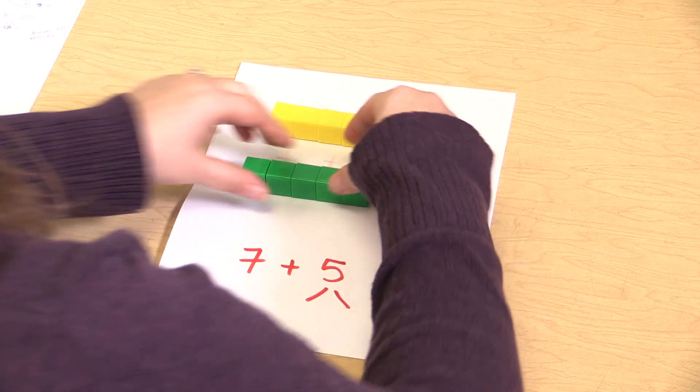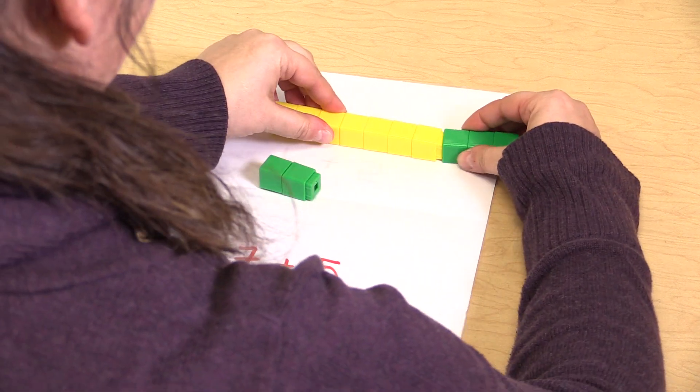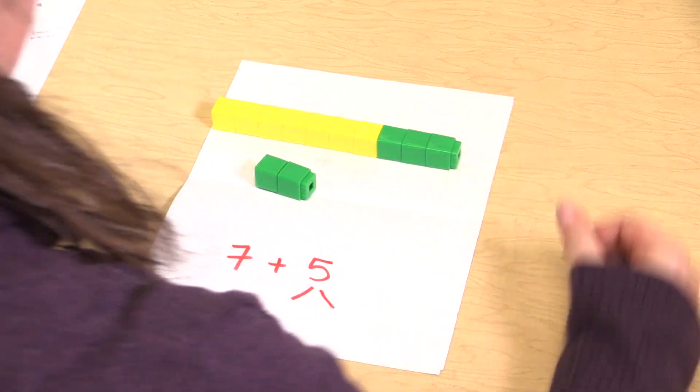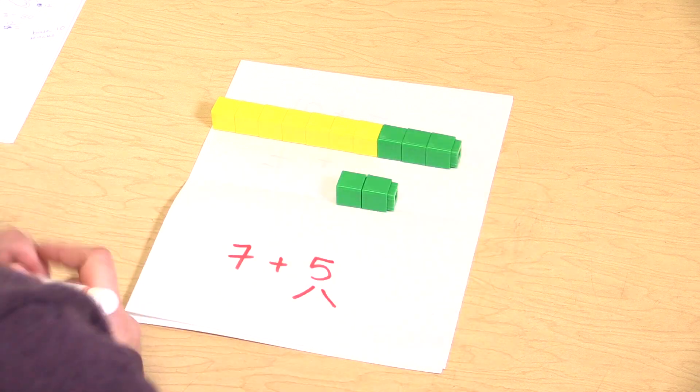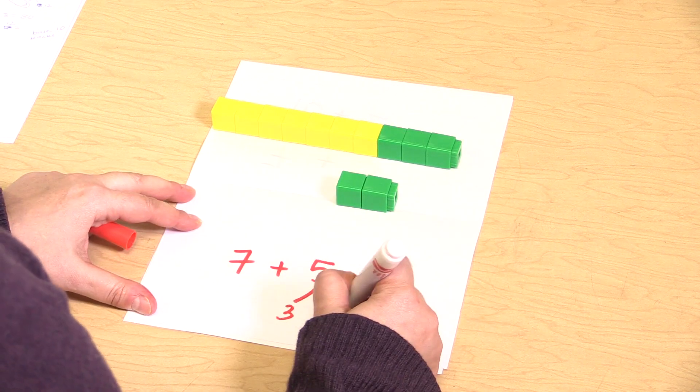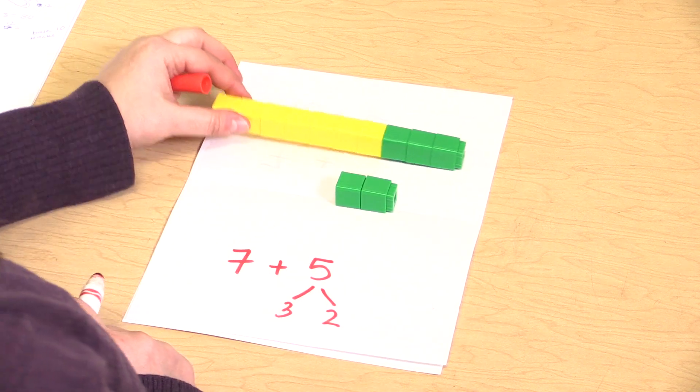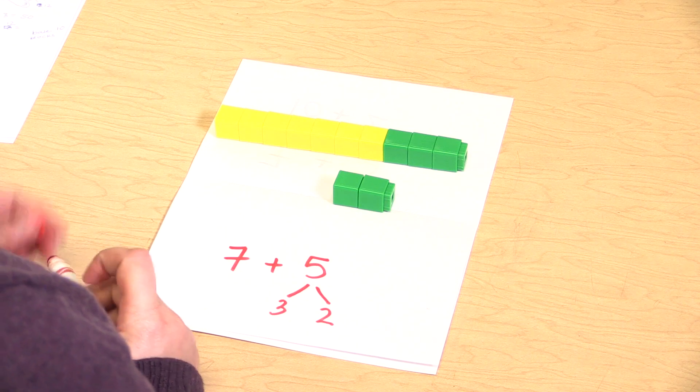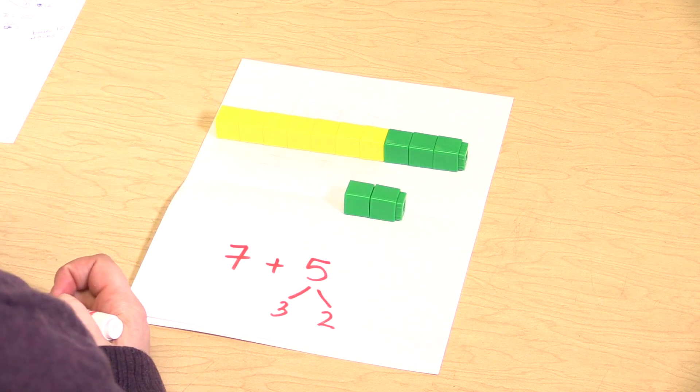So they would take three cubes and add them to their seven cubes, and they would see that they had two left over. So they would know that seven plus three equals ten, and ten plus two equals twelve.